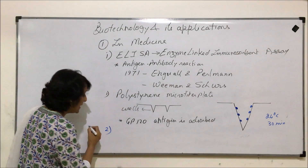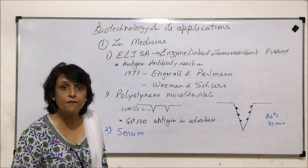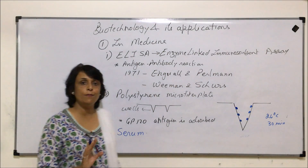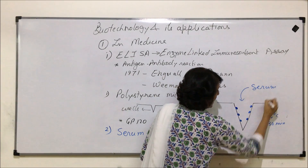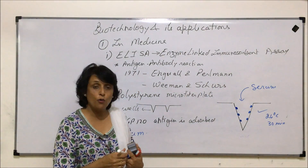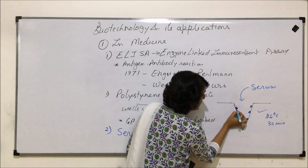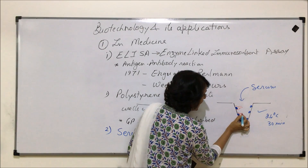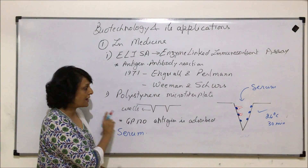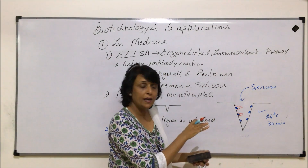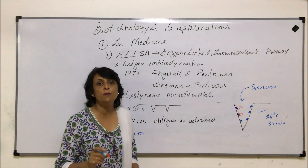The second step is to take the serum of the patient. If that patient has synthesized any antibodies, those antibodies would be present in the serum. We add that serum to the well, and again incubate it for 30 minutes at 24 degrees Celsius. If that patient's serum has antibodies, those antibodies would bind with this antigen, because the antigen we have taken is from the HIV virus. If that person has the virus in their body, they must have synthesized some antibodies, and these antibodies bind to the antigens — forming an antigen-antibody complex.